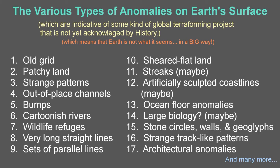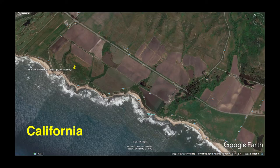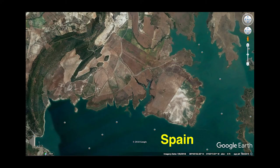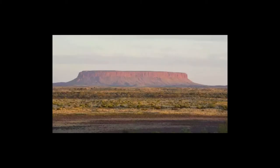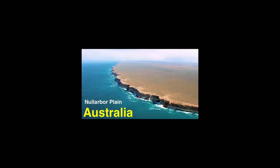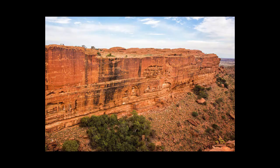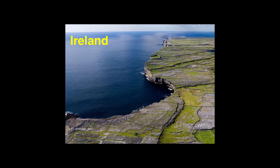Also, we have sheared flat land. Many areas look like they may have been leveled or sheared flat across, possibly including mesas. There may also be cliff sides which have been artificially sheared vertically.